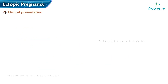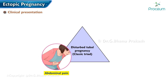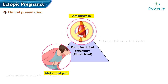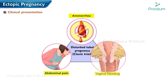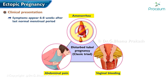Clinical presentation: the classic triad of symptoms of disturbed tubal pregnancy are abdominal pain preceded by amenorrhea, and lastly vaginal bleeding. Clinical manifestations typically appear six to eight weeks after the last normal menstrual period, but may occur later, especially if the pregnancy is at an extra-uterine site other than the fallopian tube.